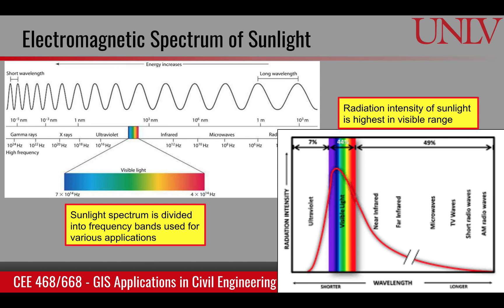The sunlight that arrives on Earth before entering the atmosphere consists of many frequencies. Here is the spectrum of sunlight divided into these ranges. At very high frequency or short wavelength — they are inversely proportional — we have gamma rays, then x-rays, then ultraviolet rays. In between the very high and low frequency ranges, we have visible light, which is the light our eyes can perceive.